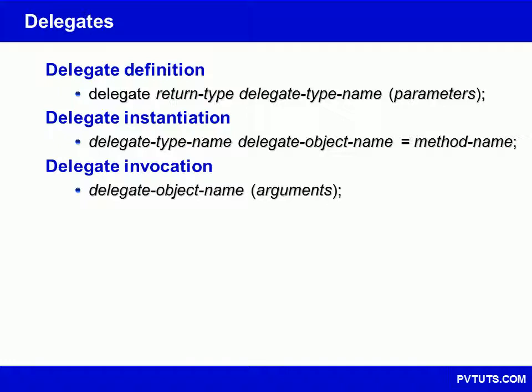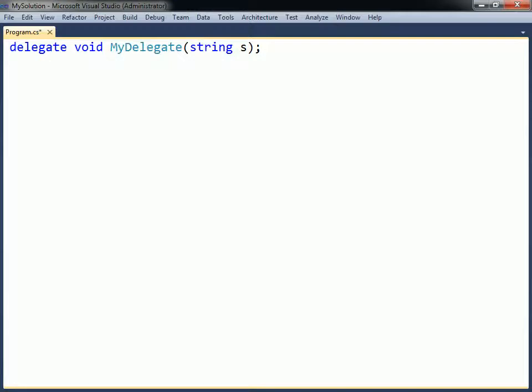A delegate is a type used to reference a method. This allows methods to be assigned to variables and passed as arguments. The delegate's declaration specifies the method signature to which objects of the delegate type can refer.